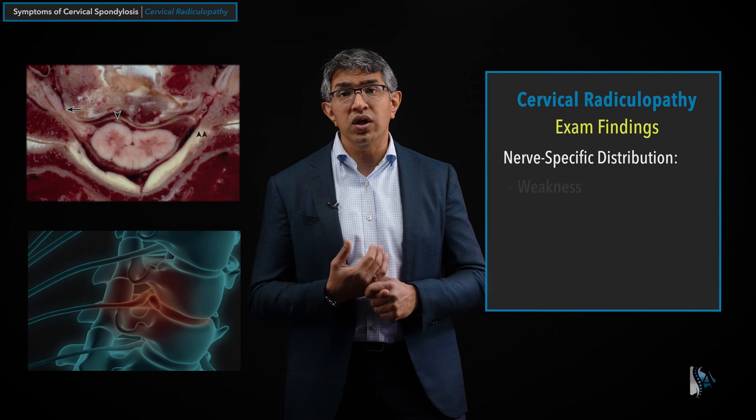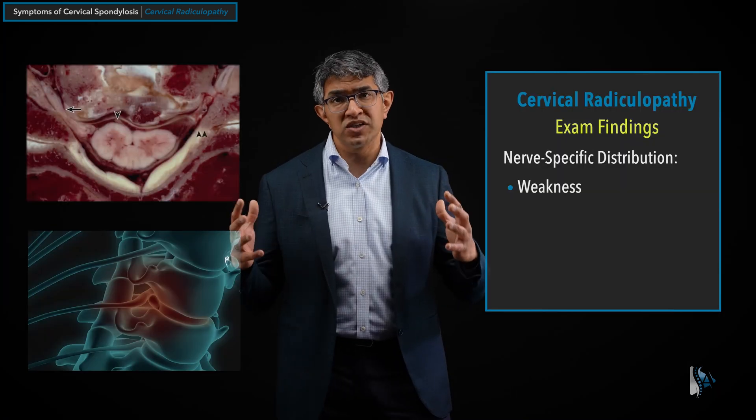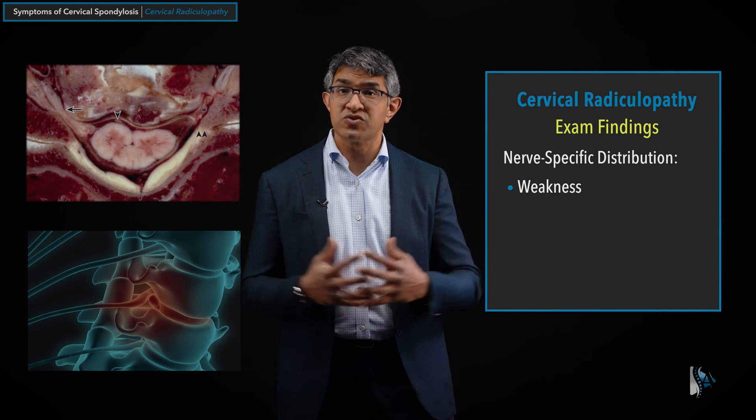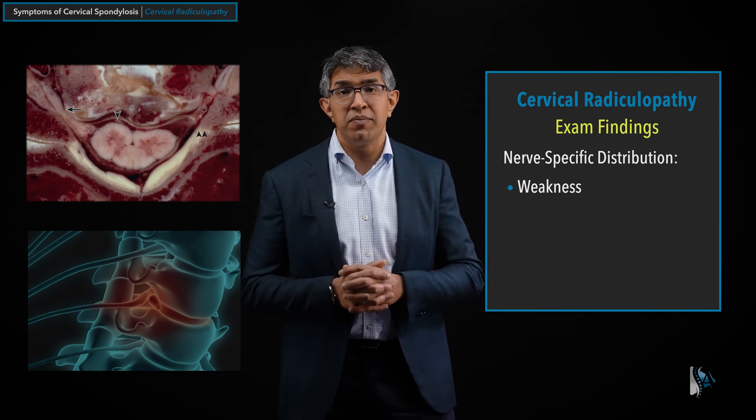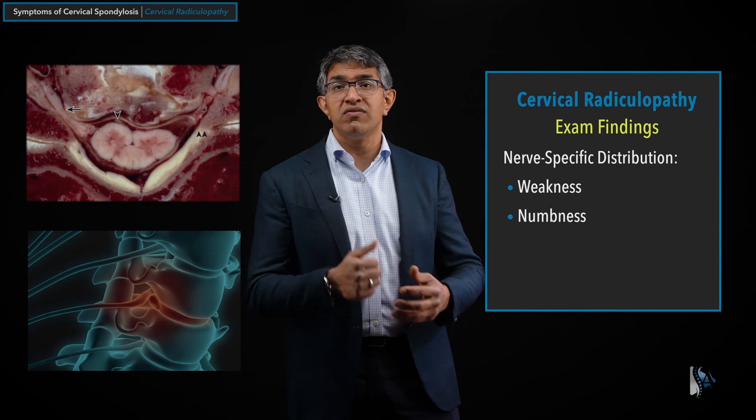Now that we've discussed the symptoms of cervical radiculopathy, let's talk about the exam findings a clinician might look for. They'll typically assess motor or muscle weakness — the muscles involved will be the same ones innervated by that nerve, so specific muscles for C6, specific muscles for C7. A comprehensive motor exam helps correlate findings with the patient's symptoms. In addition, they'll check for numbness with a sensory exam to see if the distribution lines up with cervical radiculopathy.